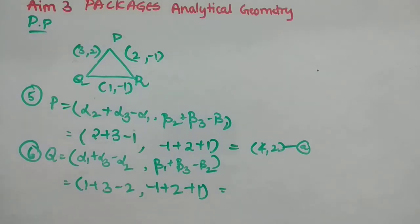Beta 1 is minus 1, beta 3 is plus 2 and minus beta 2 is plus 1 because minus into minus makes it plus. That's fine. Now, when you do all the calculations, it is going to be (2,2), option is B.